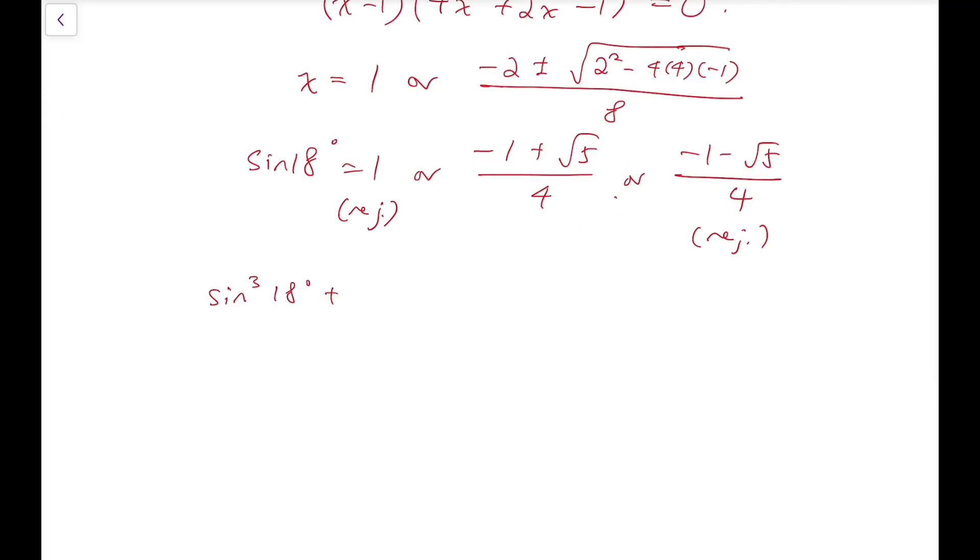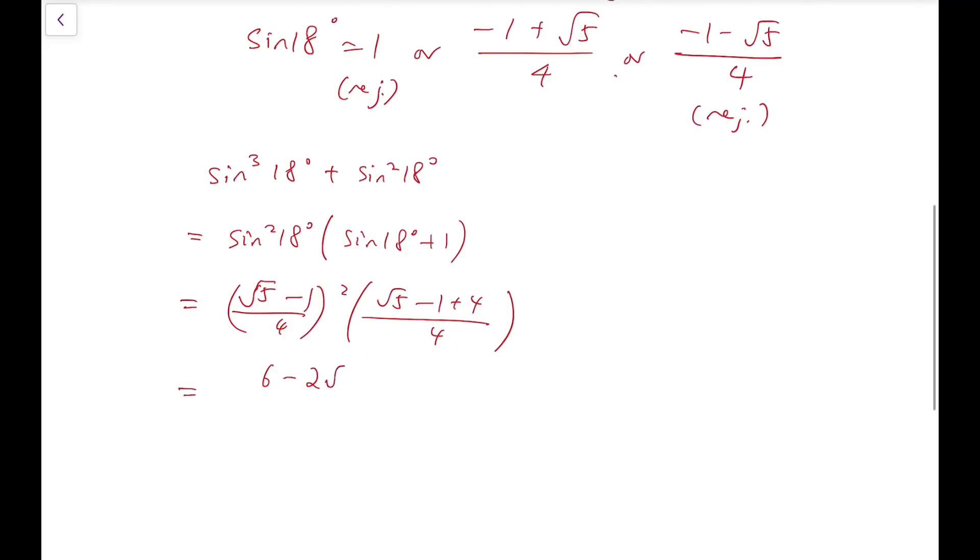So then I can try to calculate this by hand. Again we have this. Now I can try to expand. Okay so that's 18 plus 6 root 5 minus 6 root 5 and then minus 10 over 64. And that is exactly 1/8. So again we have proved this relation.